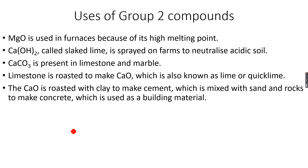Magnesium oxide is used in furnaces because of its high melting point. Why does it have a high melting point? Because magnesium oxide is an ionic compound with very strong ionic bonds throughout the lattice structure, and therefore a lot of energy is needed to break down these ionic bonds, making it suitable for furnaces.